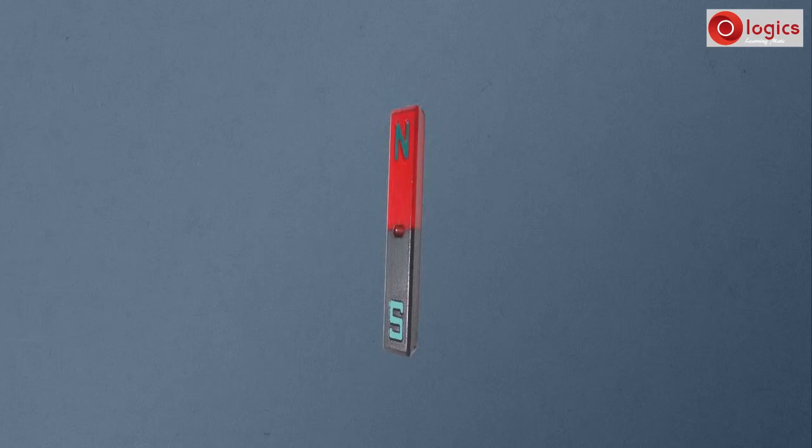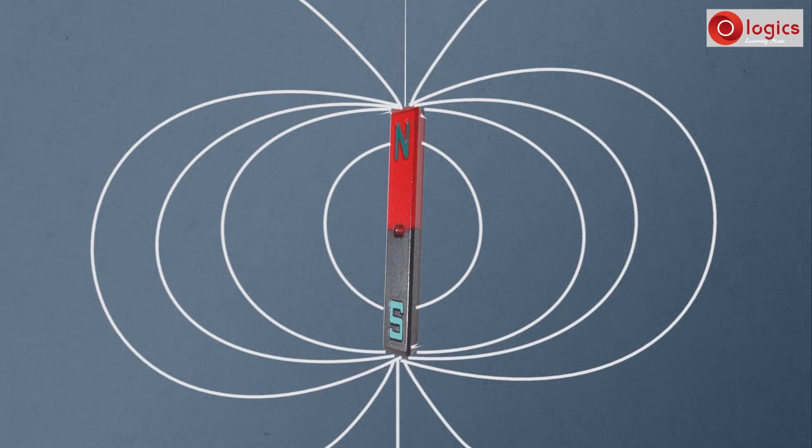Do you know what a magnetic field is? This is a magnet, and this is the magnetic field around the magnet. This magnetic field is produced by the magnet.